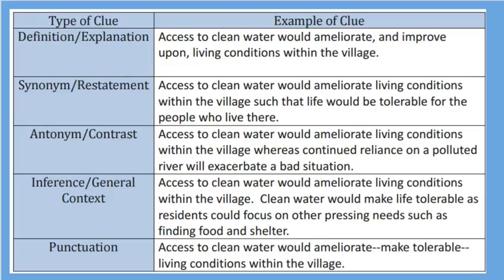Specific context clues should be explicitly taught. Let's first look at definition and explanation. An example sentence reads: 'Access to clean water would ameliorate, and improve upon, living conditions within the village.' In this type of clue, they give you a definition or explanation for an unfamiliar word. If you are unfamiliar with the word 'ameliorate,' notice what it says directly after it in the comma — 'and improve upon.' That's a definition or explanation of what ameliorate means.